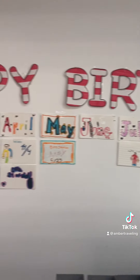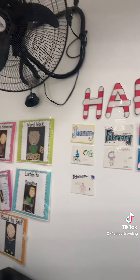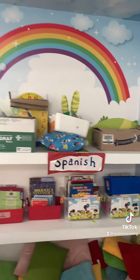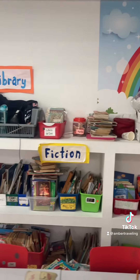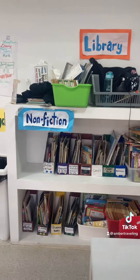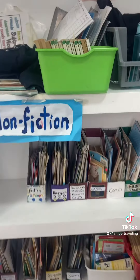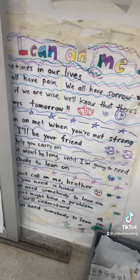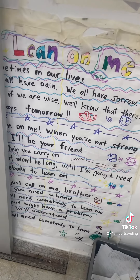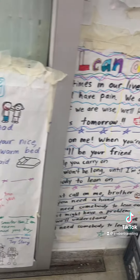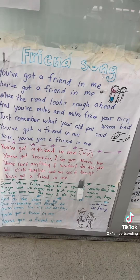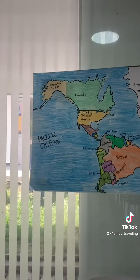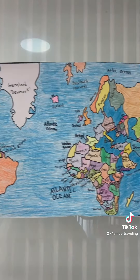Over here we have all of their birthdays written on cards. We've got pillows, which are a little disorganized, and we've got the class library. Right now we are reading Charlotte's Web so we have some of those. I also have some of the songs we've done on the walls with the lyrics, and more songs taped up.